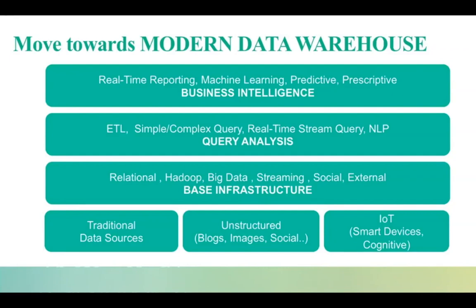The next layer provides query processing from simple to complex — stream queries acting upon real-time streams of data, and more sophisticated techniques like natural language processing, which allows querying using natural language from unstructured text. You can combine all of these to get the desired results. The topmost layer provides business intelligence through real-time reporting and sophisticated analytics using techniques like machine learning and deep learning, which learns from your data to provide predictive and prescriptive actions over time.